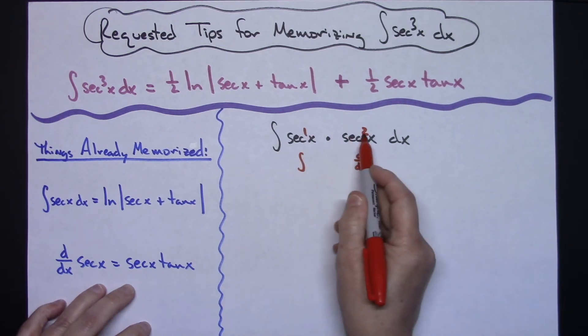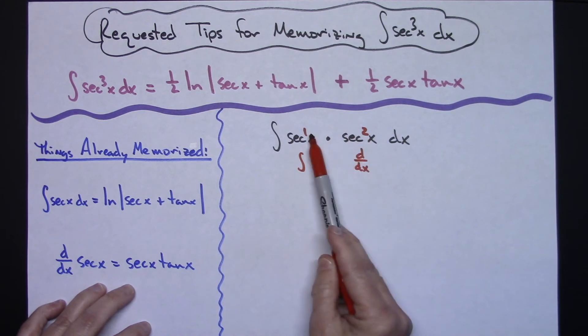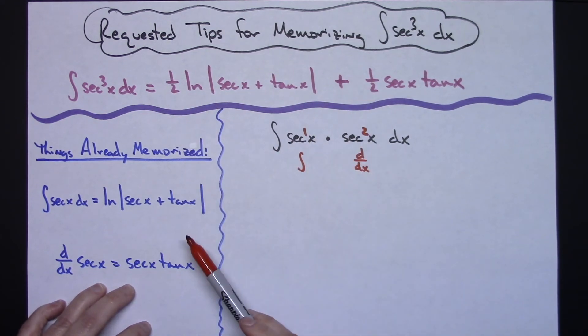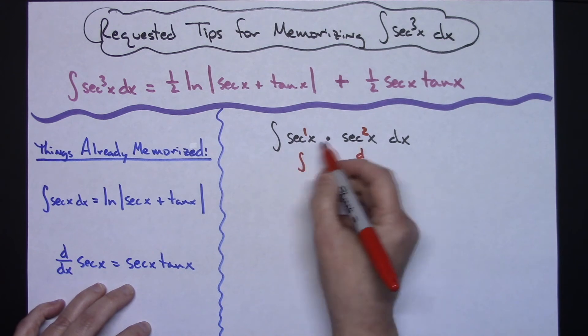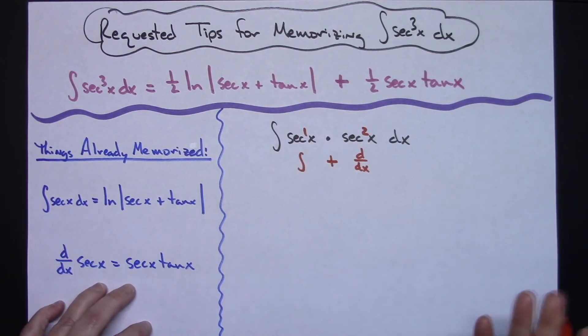Now the reason I put the 1 and the 2 in red is because that's going to help you remember to pull out the one half in front of this. And then you're going to have two things. You're going to have this answer, you're going to have this answer, and obviously there's going to be a plus sign in between for that right there.